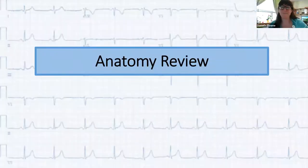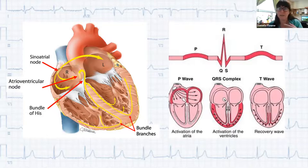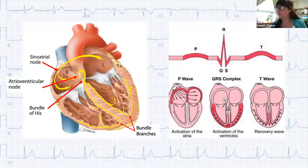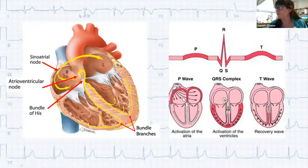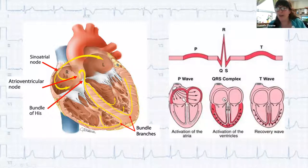For a quick anatomy review of the electrical system: the heart generates an action potential causing the muscle to contract, and electrical activity always happens before mechanical activity. Electrical activity typically starts in the SA node, located in the right atrium, then moves down to the left atrium and travels to the AV node — a group of cells at the bottom of the right atrium, just behind the tricuspid valve.